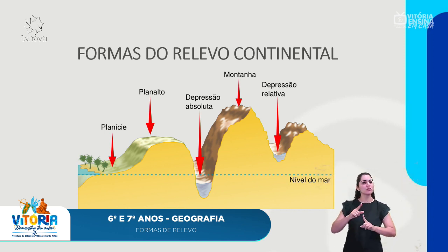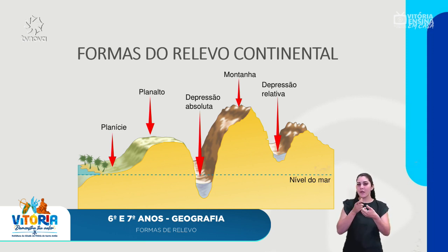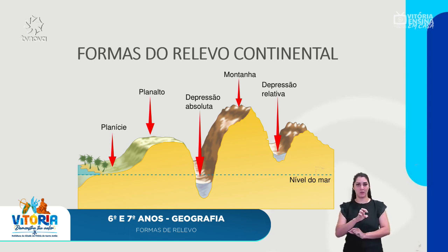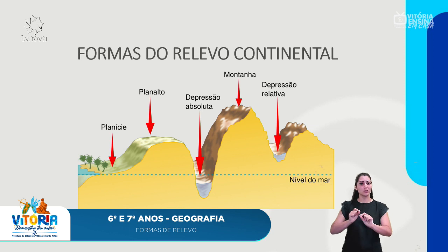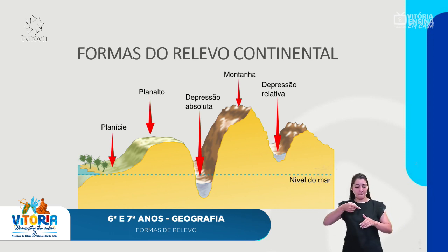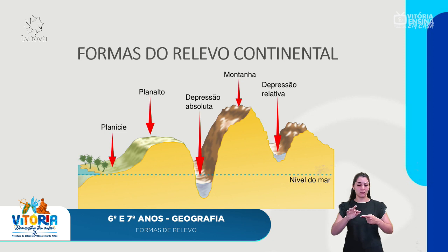Algumas formas que são criadas e modeladas são essas aqui. Partindo daqueles coqueirinhos, aquela parte mais baixa próximo ao mar, no litoral, nós temos a planície. Essa área um pouco mais alta, com topo plano, é o plano alto. Nós temos também uma depressão, que é uma parte mais profunda. Existem dois tipos: a depressão absoluta, que está abaixo do nível do mar, e a depressão relativa, que está acima do nível do mar.